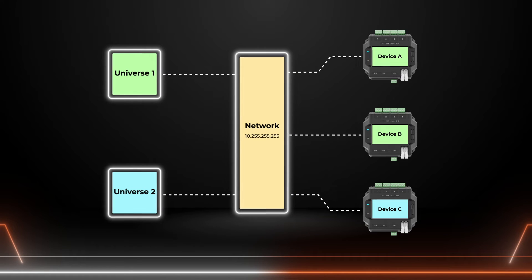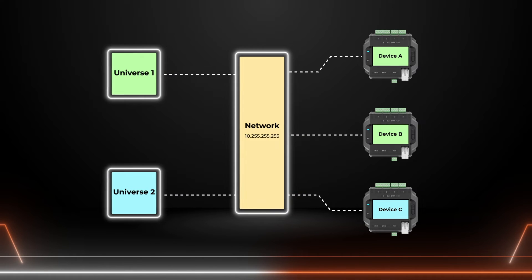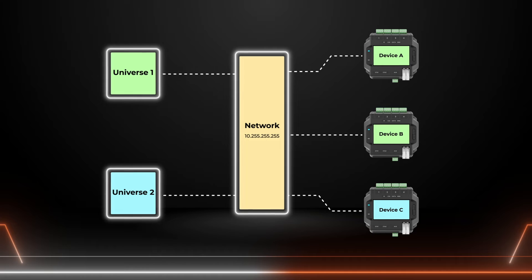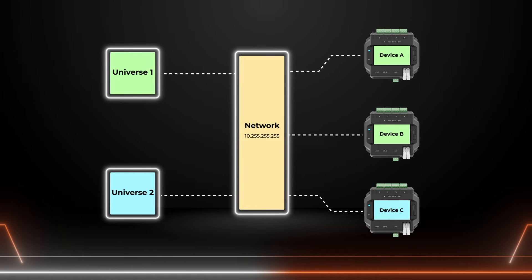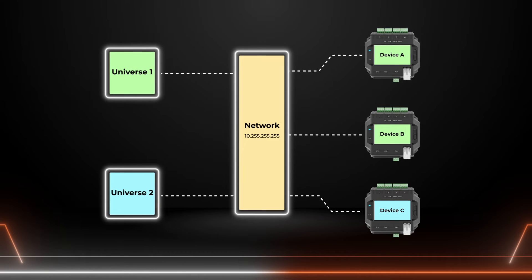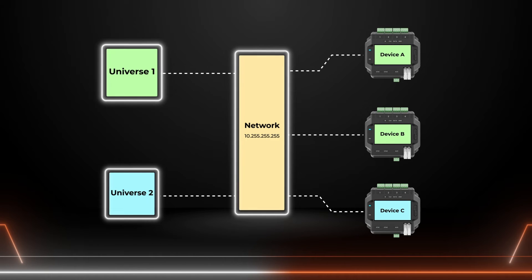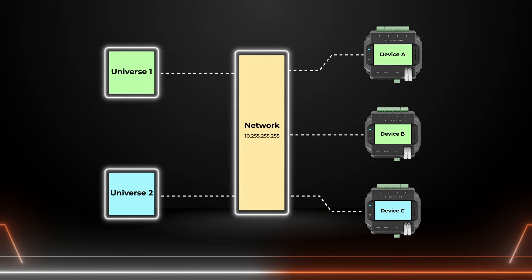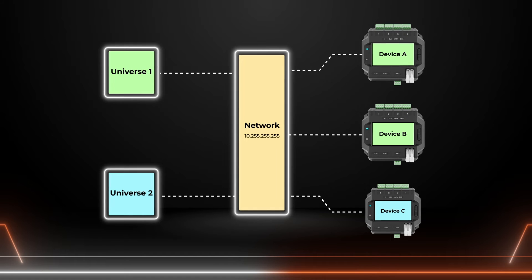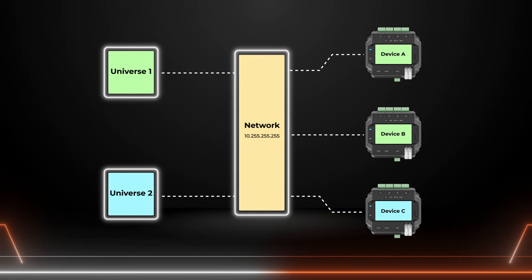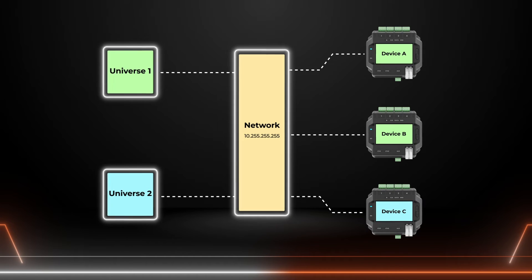The EDMX generator sends a single copy of each universe to a multicast address, which is automatically determined without user configuration. The switch then forwards a copy of universe 1 to both device A and device B, plus a copy of universe 2 to device C.